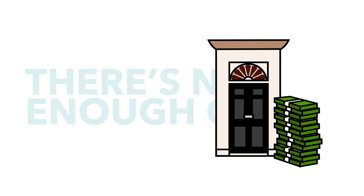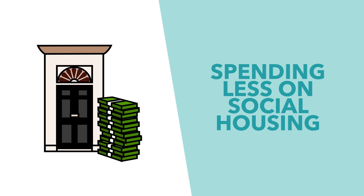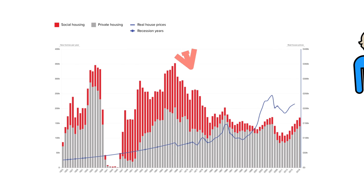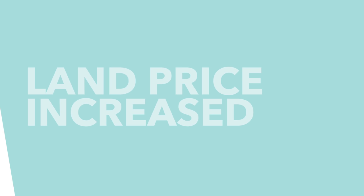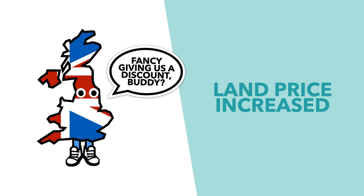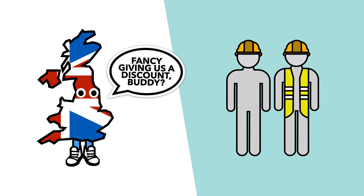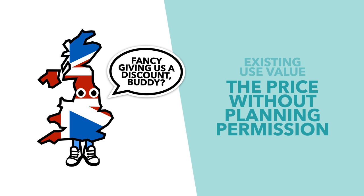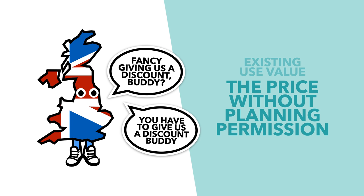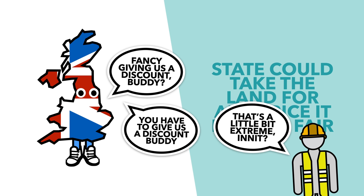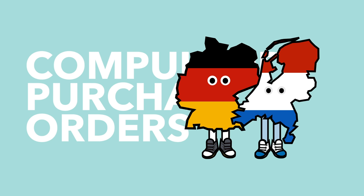Second, there's not enough money. The government spends less than it used to on supplying social housing, instead preferring demand-side benefits such as help to buy. Social housing development is also more expensive than it used to be, because land prices have gone up and the state has less power to buy land cheaply. The state used to be able to buy land at existing use value — basically what the price would be without planning permission — and could even use compulsory purchase orders (CPOs), letting the state take land for whatever it deemed a fair price. CPOs are still used in both Germany and the Netherlands.